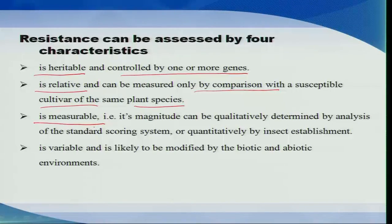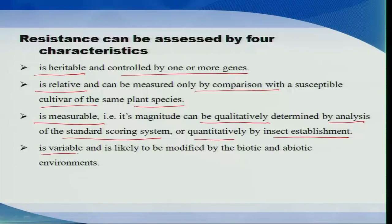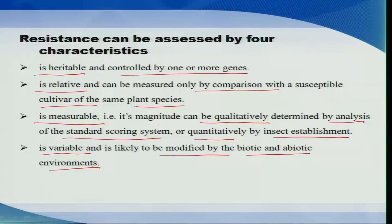Third, the character should be measurable — it can be assessed qualitatively through a standard scoring system, or quantitatively by insect establishment data. Fourth, the assessment will be variable and likely to be modified by various abiotic and biotic environmental factors.